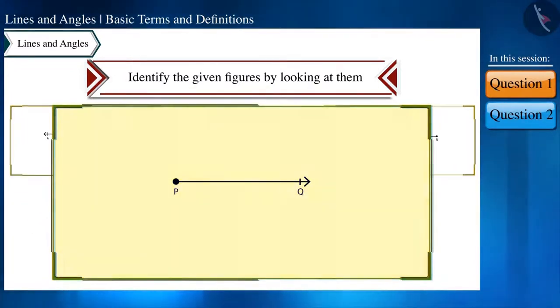Look at the second figure. Here on one end is a point and on the other end there is a symbol of an arrow. That is, it can be extended further in only one direction. So this is a ray PQ and we represent it like this.